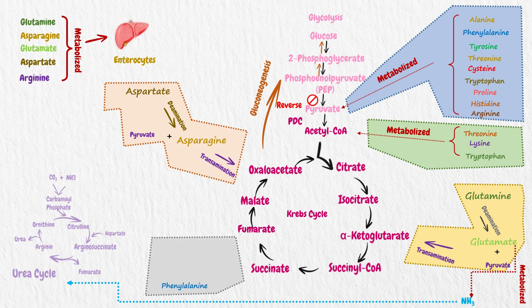And other amino acid which is phenylalanine converts to tyrosine through phenylalanine hydroxylase, which is an enzyme, and then it converts to fumarate.